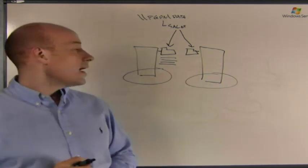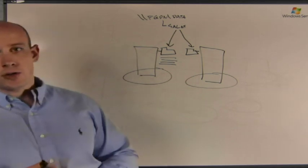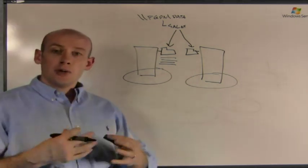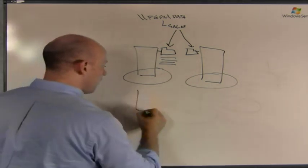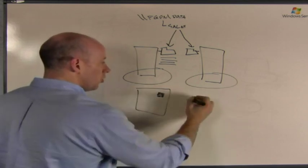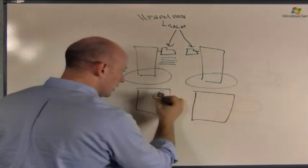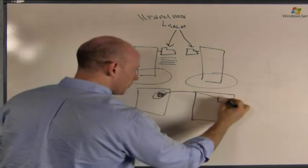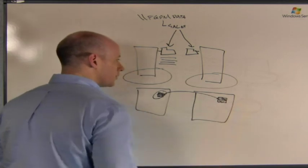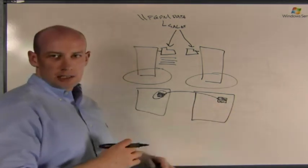And DFSR actually replicates the data between replicas and it only replicates the changes to a file. So it uses remote differential compression RDC to only replicate, if I have a great big file, only this little bit changed, all it replicates over, the file's already on the other location, is that little bit. So that's the only change that actually gets made.